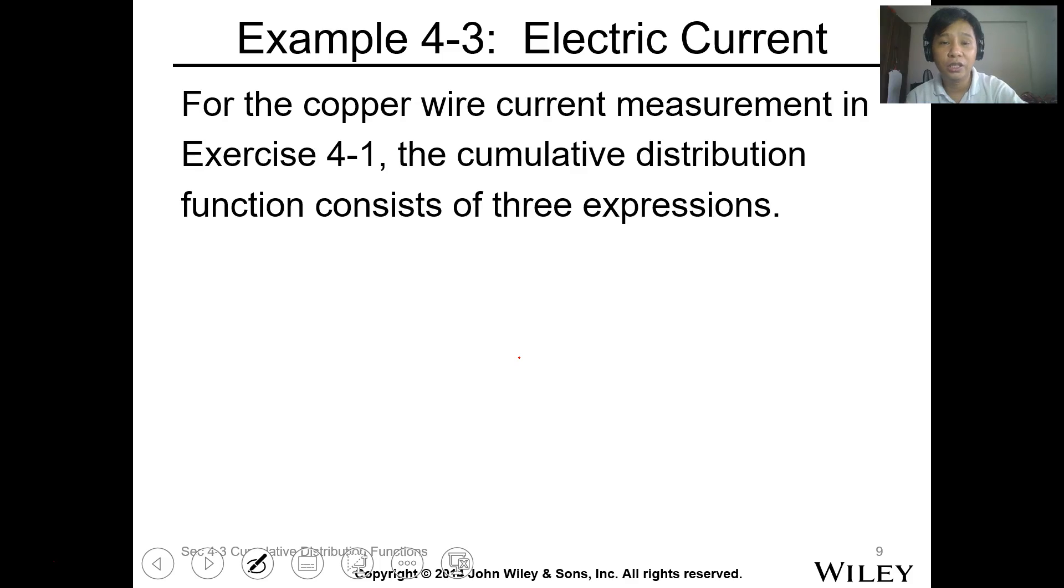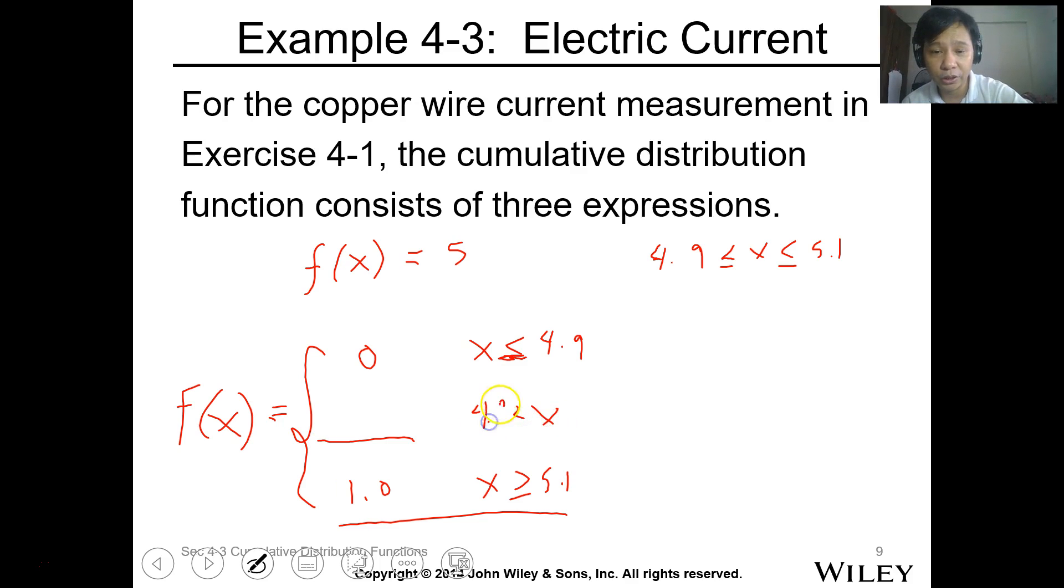So we have f of X as 5 and this is defined from 4.9 to 5.1. So we define that F of X is 0 when X is less than 4.9, and when X is greater than or equal to 5.1 this is 1.0 because total of the integration is 1.0. So ang kailangan natin hanapin, ano yung value when X is between 4.9 to 5.1.